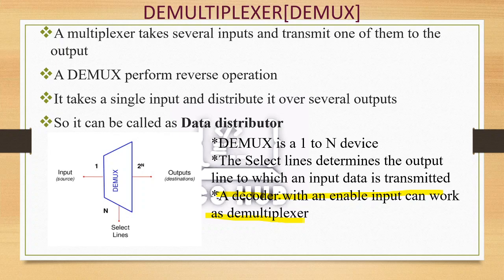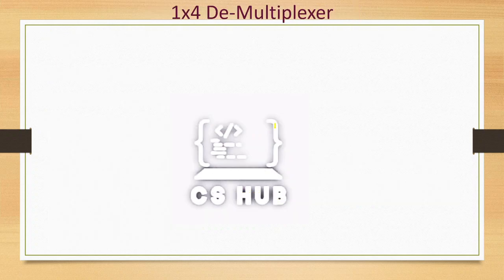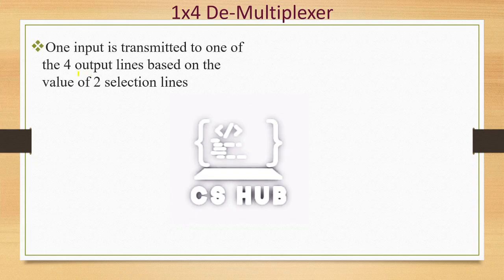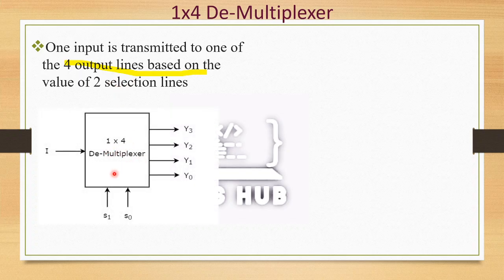A demultiplexer is also known as a data distributor, whereas a multiplexer is known as a data selector because it selects a single data from several input lines. A demultiplexer distributes a single input over several output lines. For a 1-to-4 demultiplexer, a single input is distributed over 4 output channels. The input I is transmitted to one of the 4 output lines — Y0, Y1, Y2, Y3 — based on the value of 2 selection lines S0 and S1.